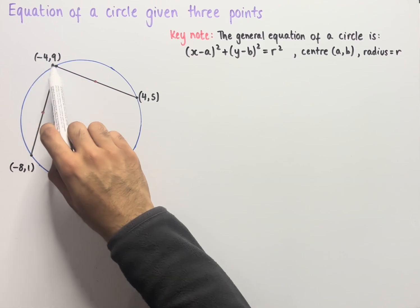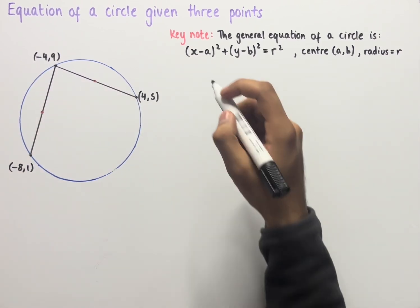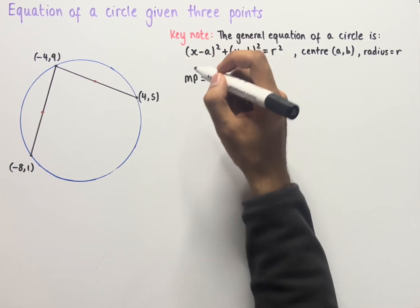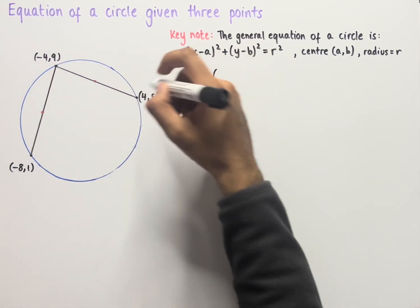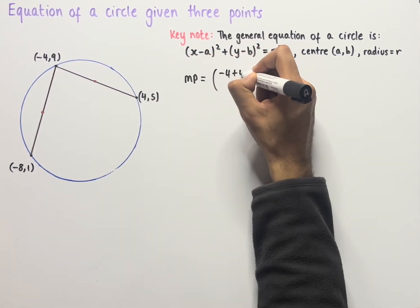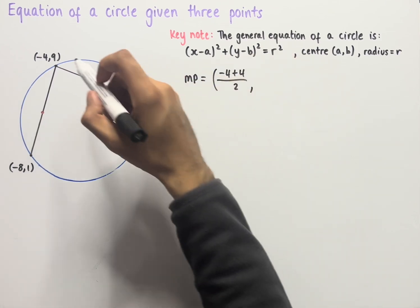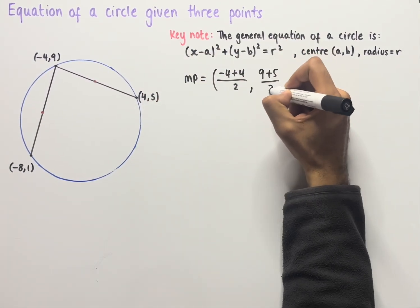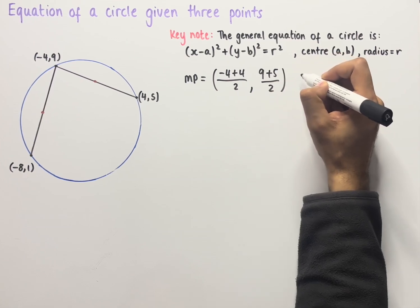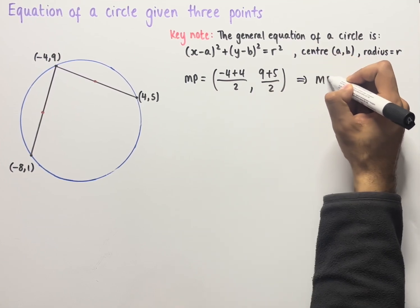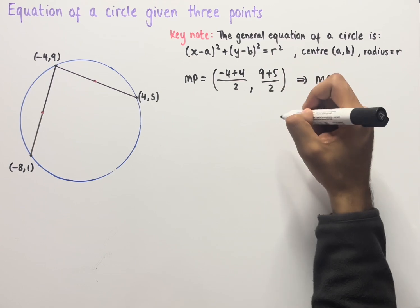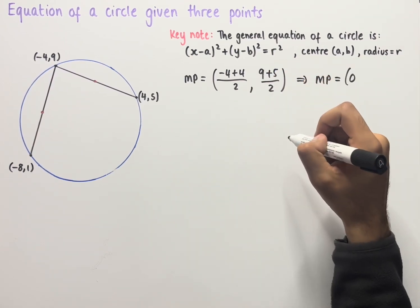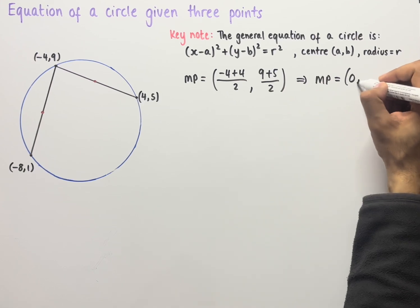Finding the midpoint between (-4, 9) and (4, 5), we have that midpoint MP equals (-4 + 4) / 2 and (9 + 5) / 2. Simplifying, -4 + 4 is zero, divided by two is zero, and 9 + 5 is 14, divided by two is seven. So the midpoint is (0, 7).